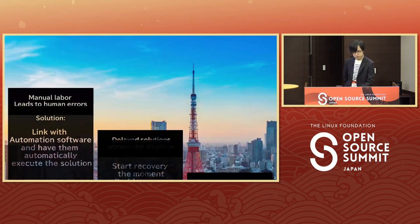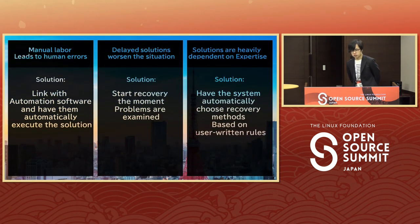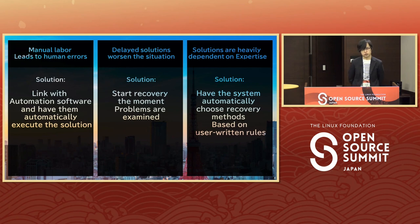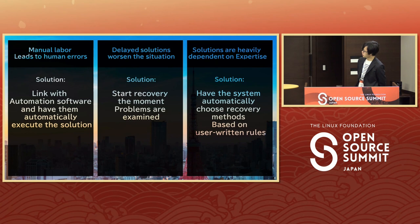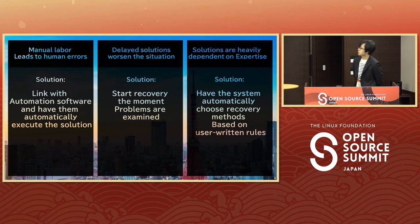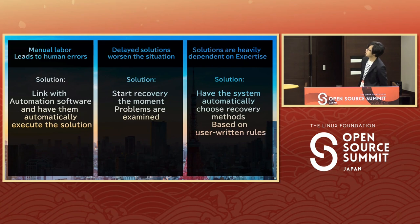Looking at the problems, we can see that numerous of them originally come from the same root, and in fact most of them narrow down to three problems: human errors caused by manual labor, situations getting worse because solutions are delayed, and solutions being heavily dependent on expertise.